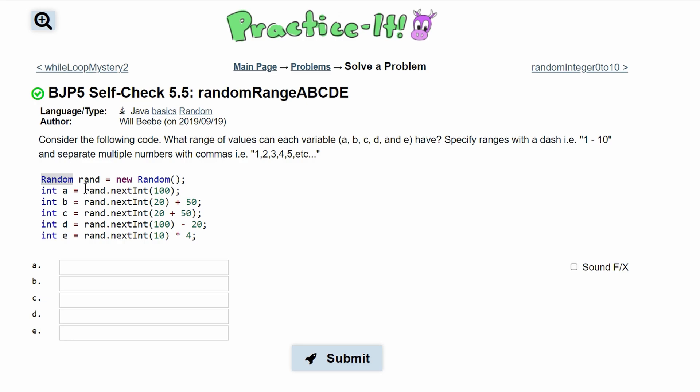We have random and then we have any name that we can come up with, and then we set this equal to new random, and inside of that we have our parentheses, or behind that we have parentheses and a semicolon.